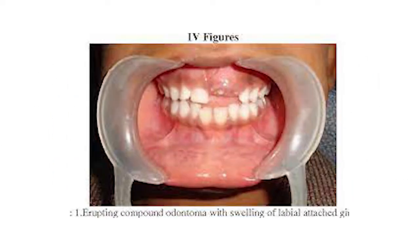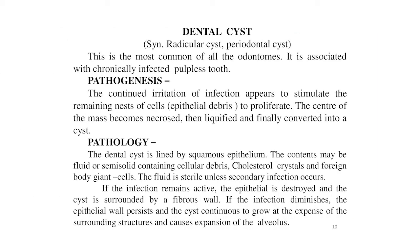Here is an image of the dental cyst on your screen. The dental cyst, also called radicular cyst or periodontal cyst, is the most common of all odontomes, associated with a chronically infected pulpless tooth. In pathogenesis, continued irritation and infection stimulates the remaining epithelial debris to proliferate; the center becomes necrotic, then liquefied, and finally converted into a cyst.